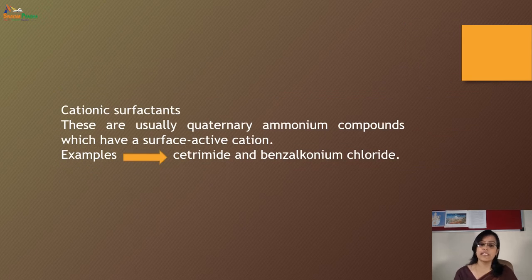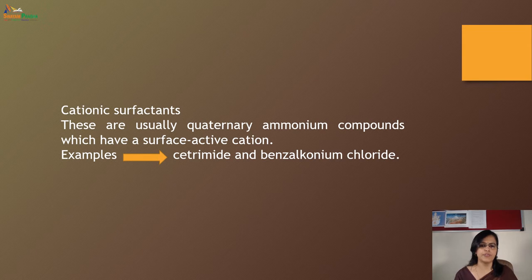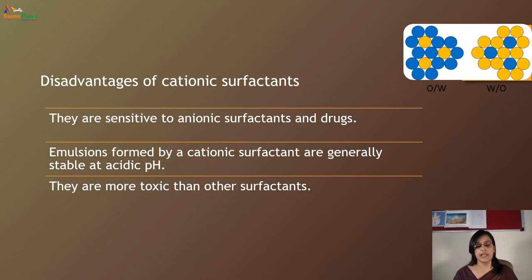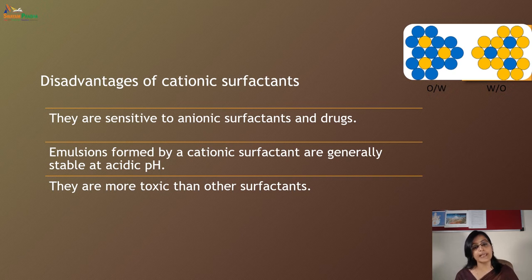Cationic surfactants are usually quaternary ammonium compounds which have a surface active cation. An example is cetrimide and benzalkonium chloride. The disadvantages of cationic surfactants are that they are sensitive to anionic surfactants and drugs, emulsions formed by cationic surfactants are generally stable only at acidic pH, and they are more toxic than other surfactants.